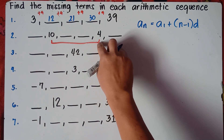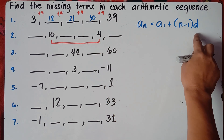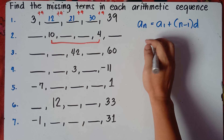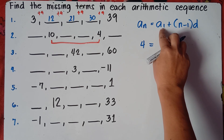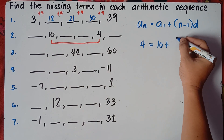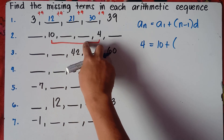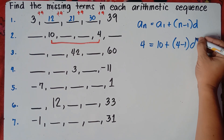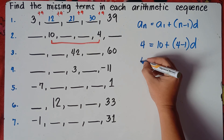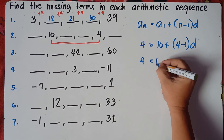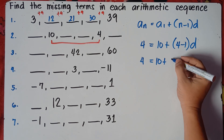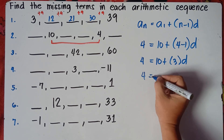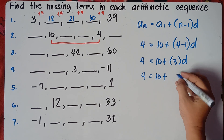So a sub n will be our last term — we use 4 as our last term and 10 as our first term. So a sub n: 4 equals 10 plus n is the number of terms — we have 4 terms — so 4 minus 1 times d. This gives: 4 equals 10 plus 4 minus 1 which is 3 times d, so 4 equals 10 plus 3d.